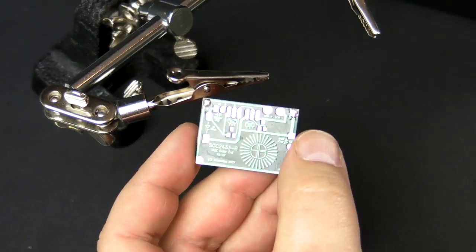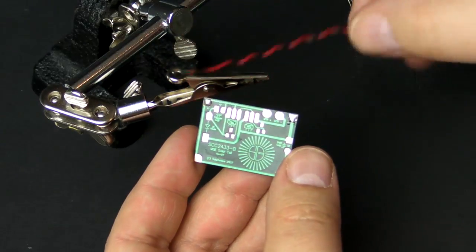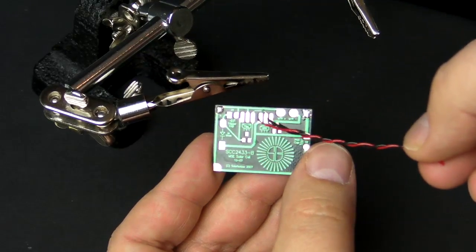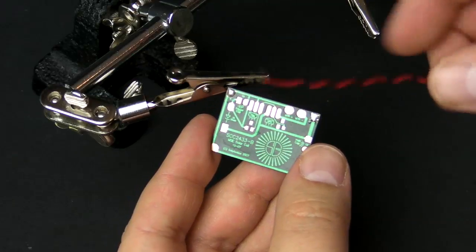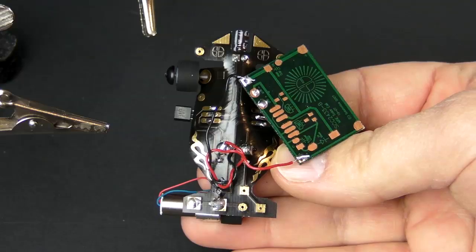Now the last thing you have to do is attach the solar cell. The kit comes with a red and black wire. You just have to strip the ends, tin them, attach them to the solar cell, and then attach them to the car. We're pretty much good to go.